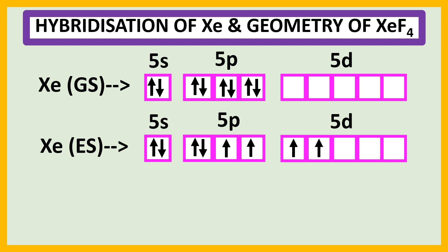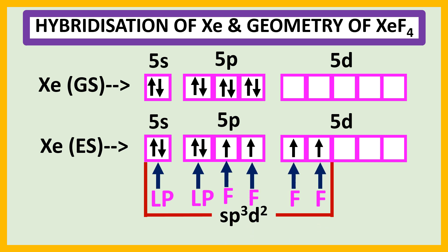The hybridization of the central atom xenon is sp3d2. Among these 8 electrons, there are 2 sets of paired electrons and 4 single electrons. These 2 sets of paired electrons form the lone pairs and these 4 single electrons form 4 sigma bonds with 4 fluorine atoms.